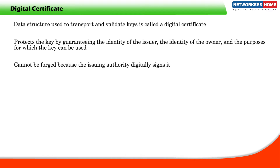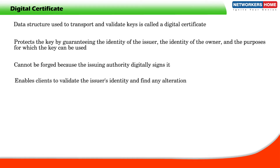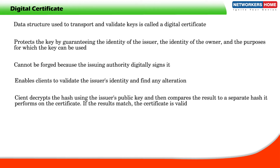A certificate cannot be forged because the issuing authority digitally signs it. The signature is applied to a hash of the certificate. This enables clients to validate the issuer's identity and find any alteration. The client decrypts the hash using the issuer's public key and then compares the result to a separate hash it performs on the certificate.